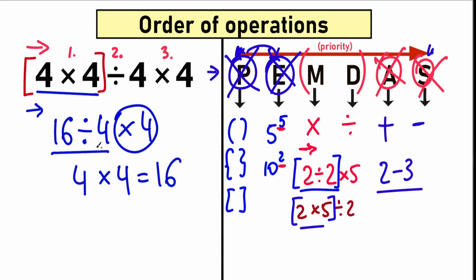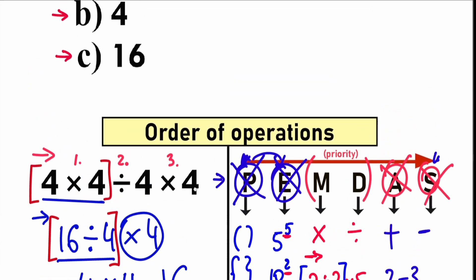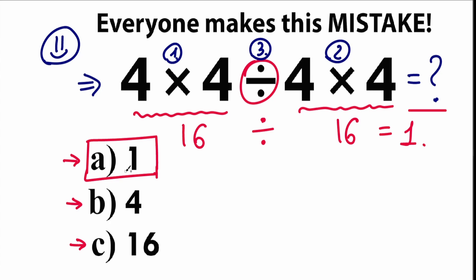Now we have a division-multiplication mixture. What is the first sign from left to right? It is division. So 16 divided by 4 equals 4. And we still have multiplication by 4 remaining. So 4 times 4 equals 16. According to PEMDAS, our correct answer is 16. But let's go back to the beginning — we said the correct answer was 1. As I said before, we can't solve our question randomly.